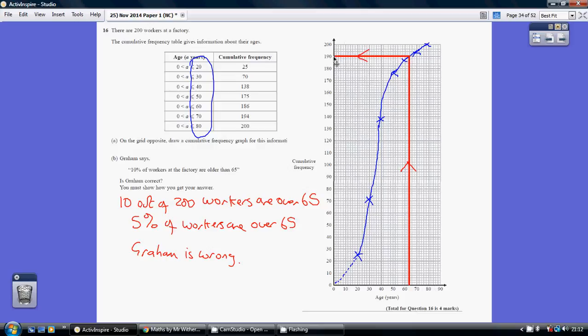So I'm actually saying 10 of the 200 workers are over 65. Now that's 5%. 10 out of 200 is 5%, not 10%. So Graham's wrong.